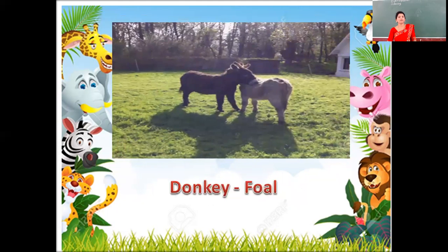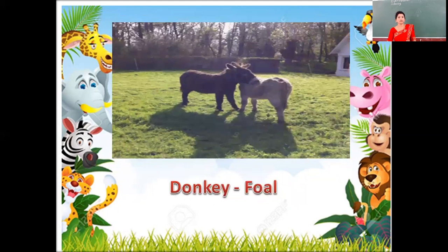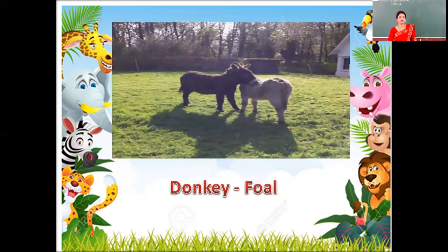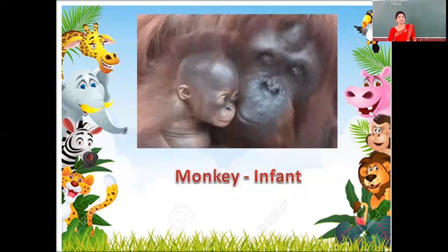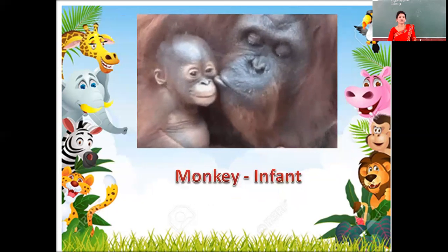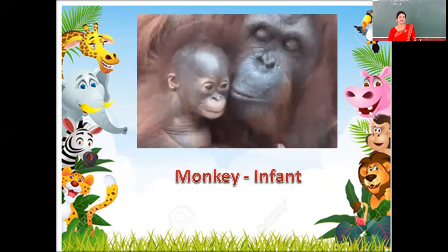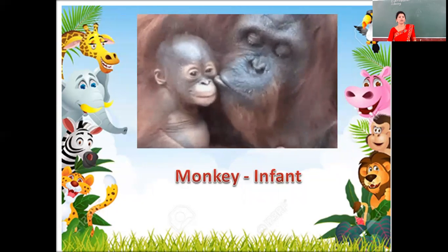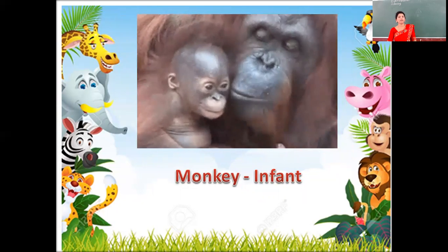Next feature is of donkey and foal. Young ones of donkey is foal. D-O-N-K-E-Y, donkey. F-O-A-L, foal. Next feature is of monkey and infant. Young ones of monkey is infant. M-O-N-K-E-Y, monkey. I-N-F-A-N-T, infant.